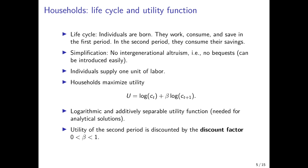With logarithmic utility, income effects and substitution effects cancel each other out. For example, a higher interest rate would increase the incentive to save (substitution effect) but also increase asset income, which boosts first-period consumption (income effect). These two effects cancel under log utility, enabling an analytical solution of the overlapping generations model. Many OLG models use logarithmic utility precisely for this analytical tractability.